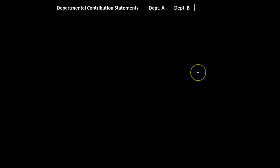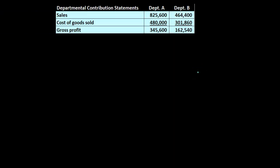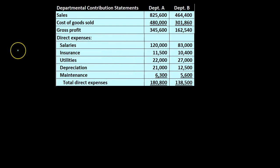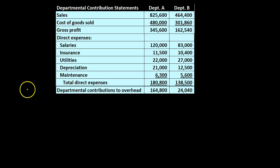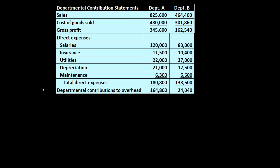Let us go through the indirect expenses. First, let us look at our departmental contribution income statement. We have sales, cost of goods sold, and gross profit — these are straightforward income statement numbers. Then we have our direct expenses, which are the expenses we could apply directly to each department. What we want to concentrate on now are the indirect expenses. Subtracting total direct expenses from gross profit gives us the departmental contributions to overhead.